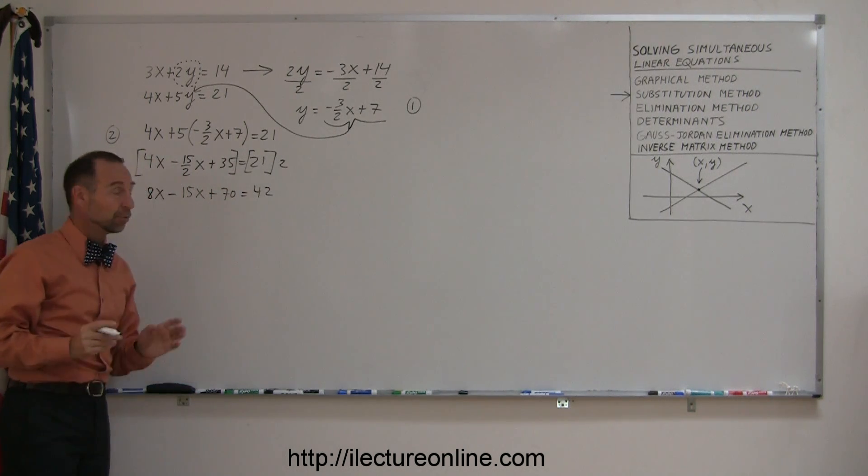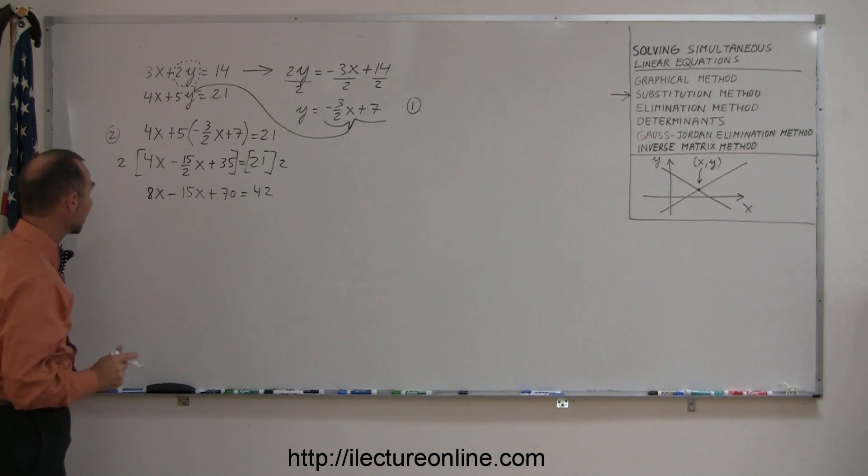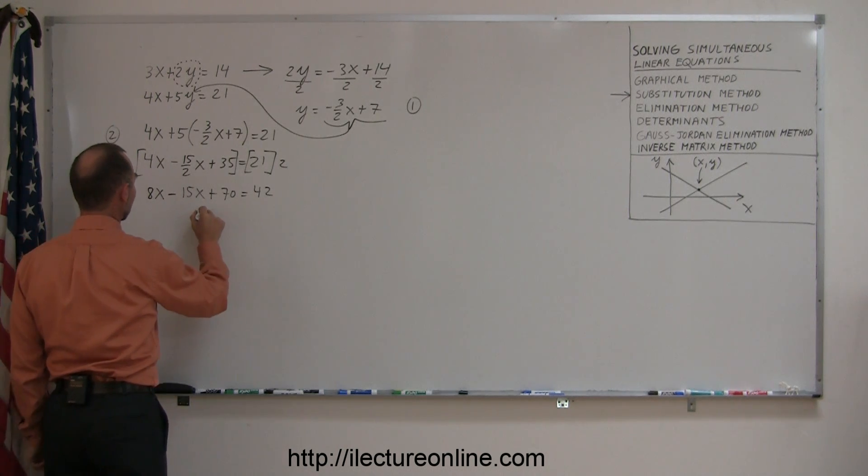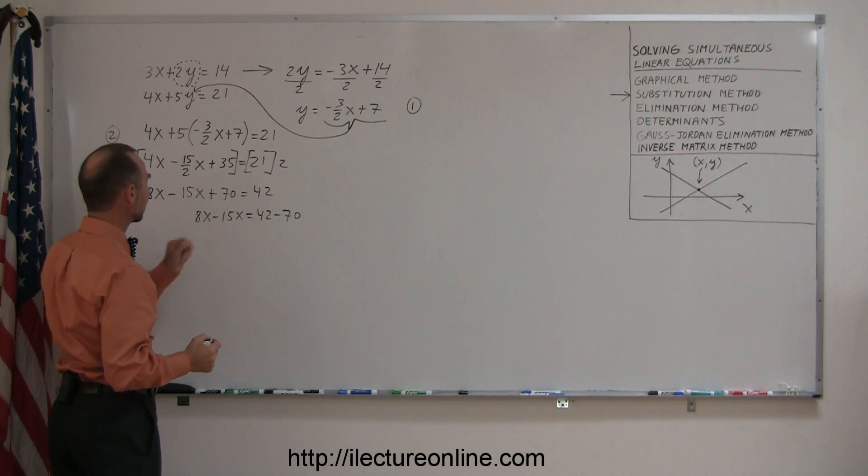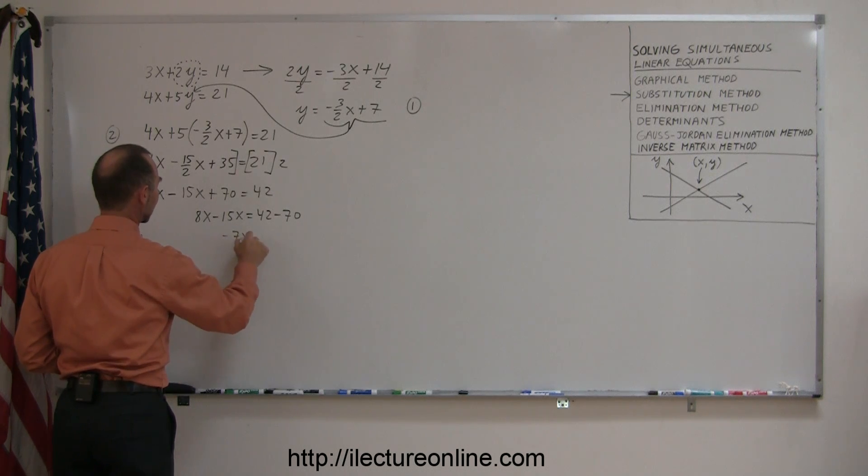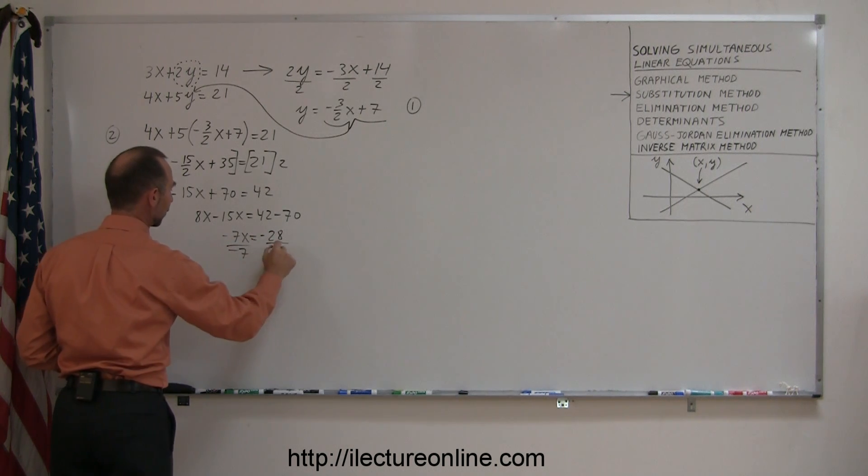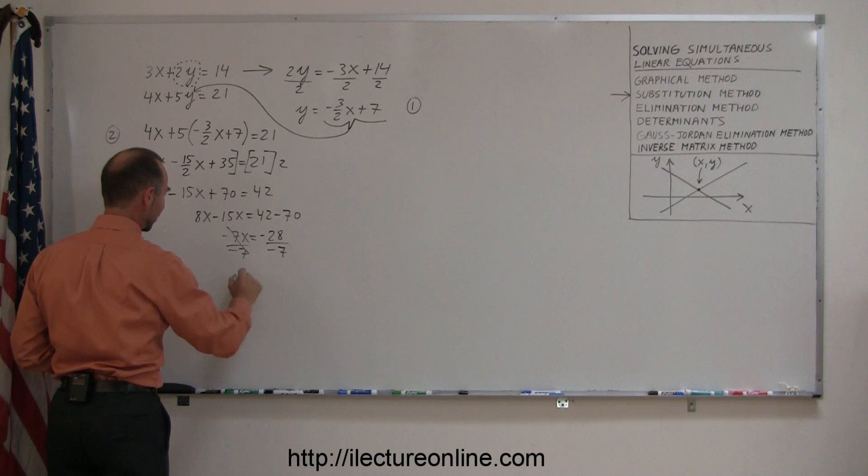Now I'll go ahead and move all my numbers to one side, leave all the x's on the other side, so I have 8x minus 15x equals 42 minus 70. So I have a plus 8 minus 15, that's a minus 7x. I have a 42 and a minus 70, that means minus 28. Divide both sides by the numerical coefficient in front of the x, that cancels out, so x equals a positive 4.